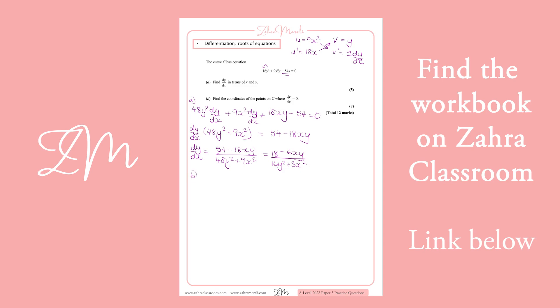So that's part A. For part B, find the coordinates when dy/dx = 0. When we make this equal to 0, the denominator disappears. We essentially will be left with 18 - 6xy = 0.